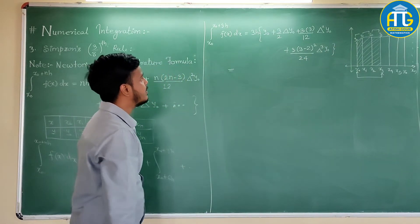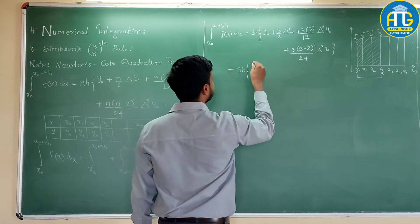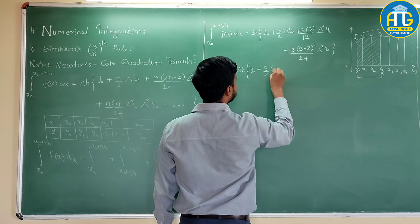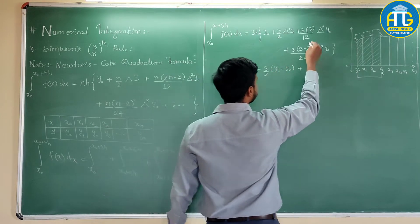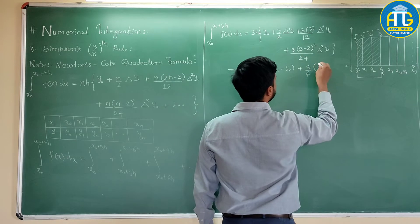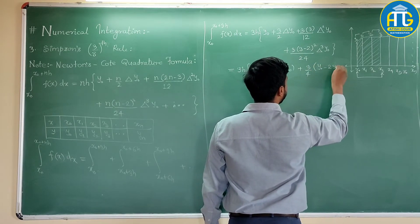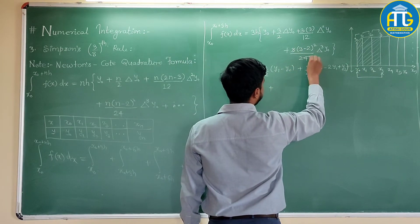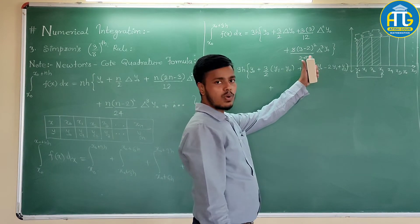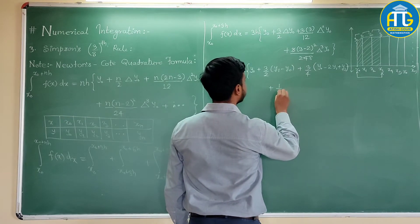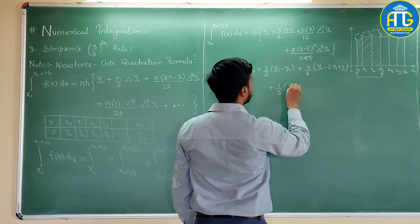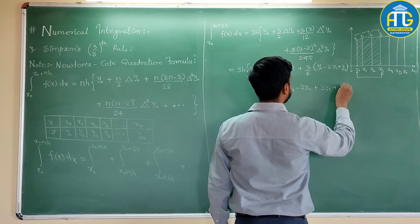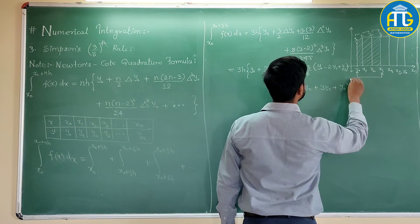So this is nothing but 3h and you can write this as y0 plus 3 by 2, what is this? Delta y0 is y1 minus y0 plus, this is 3 by 4, this is y0 minus 2y1 plus y2 plus, this is 3 times 1 are, this is 3 times 8 are and this is 3 minus 2, 1, 1 whole squared is 1. So this is 1 by 8, del cubed would be y3 minus 3y2 plus 3y1 plus y0. So we end up here.